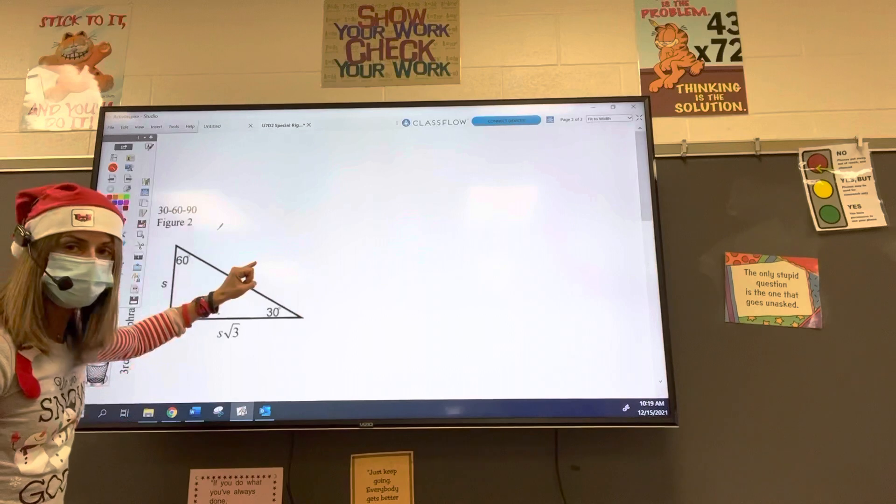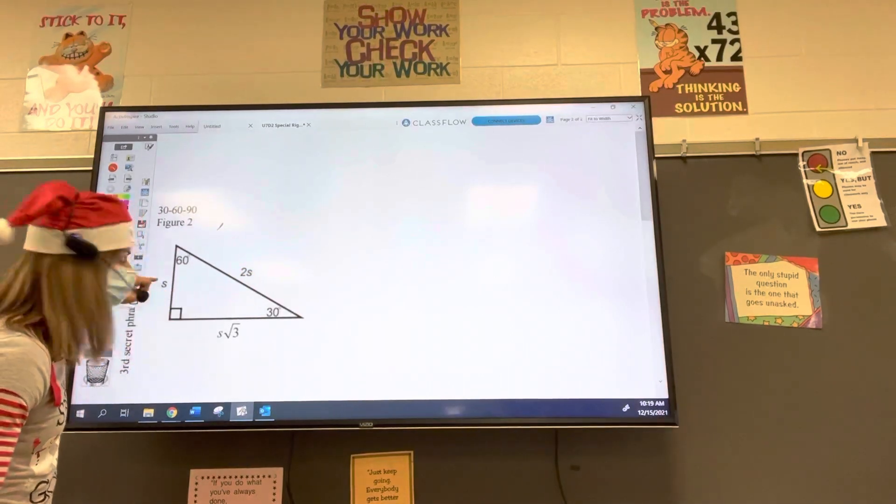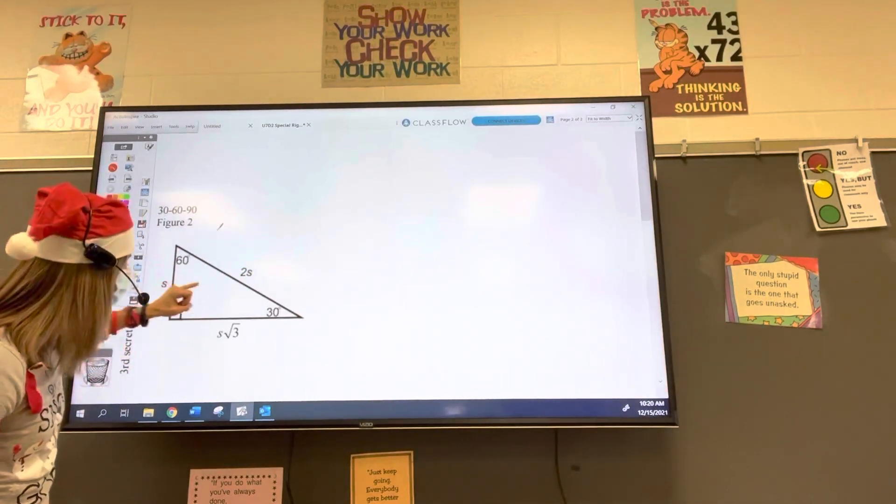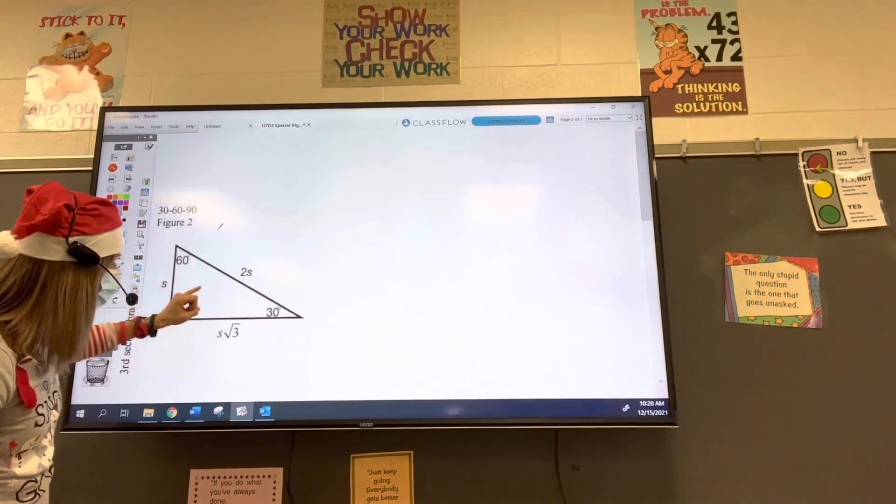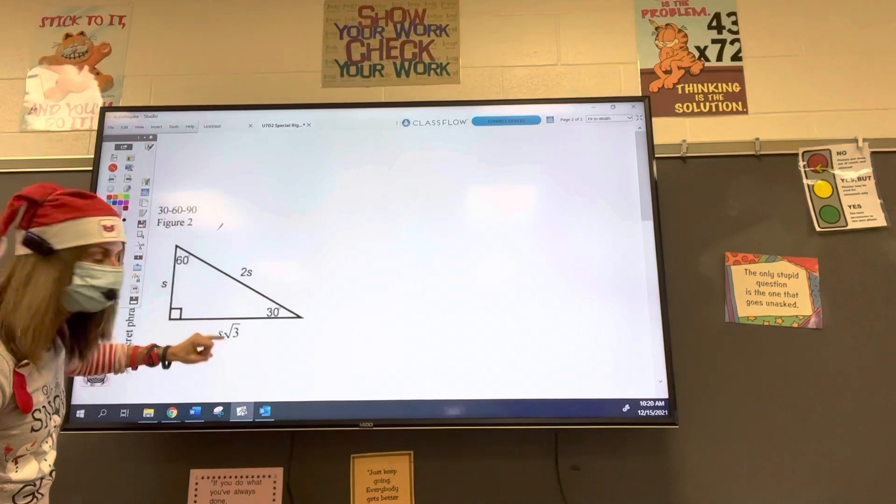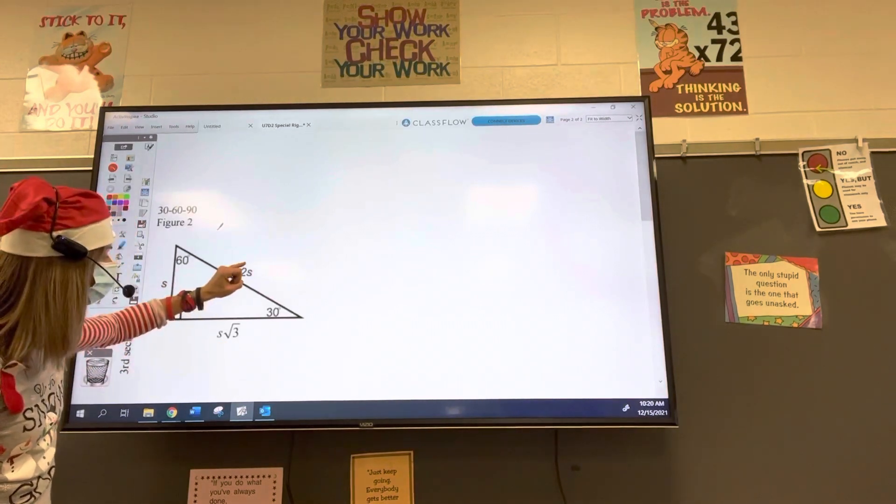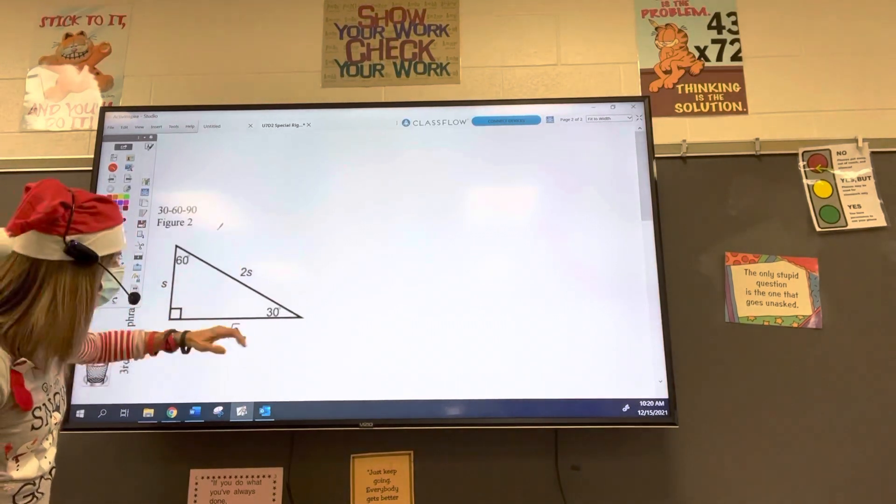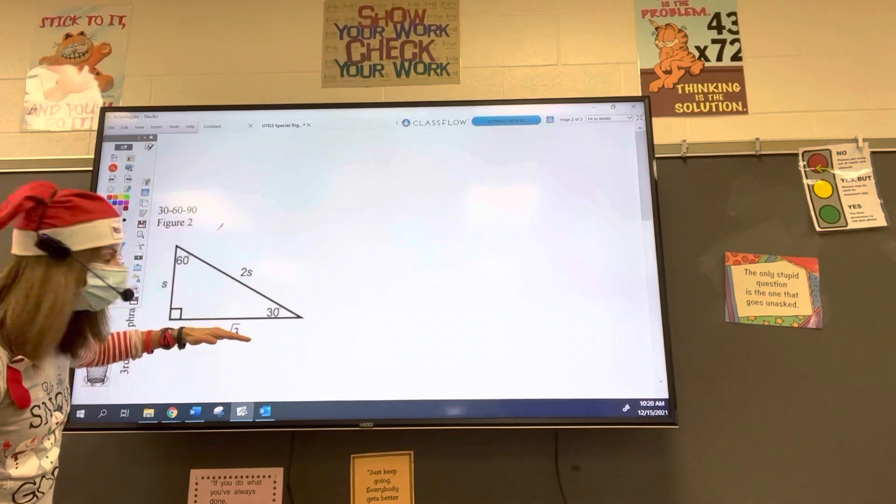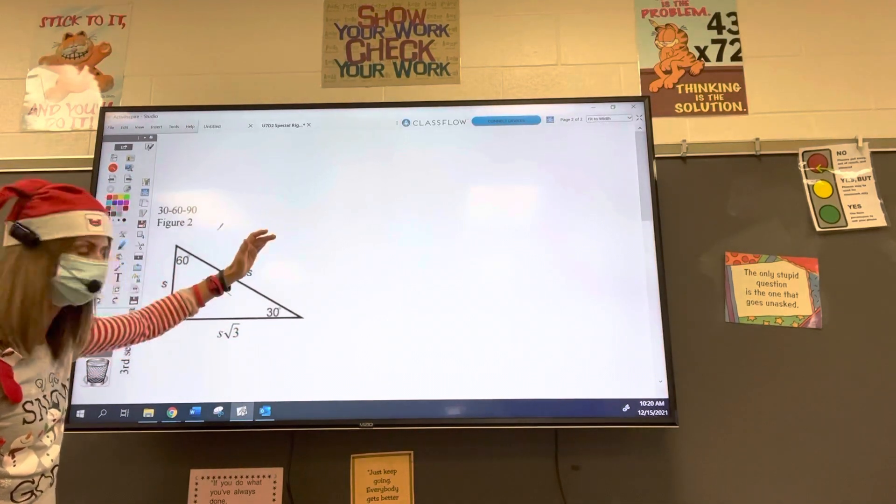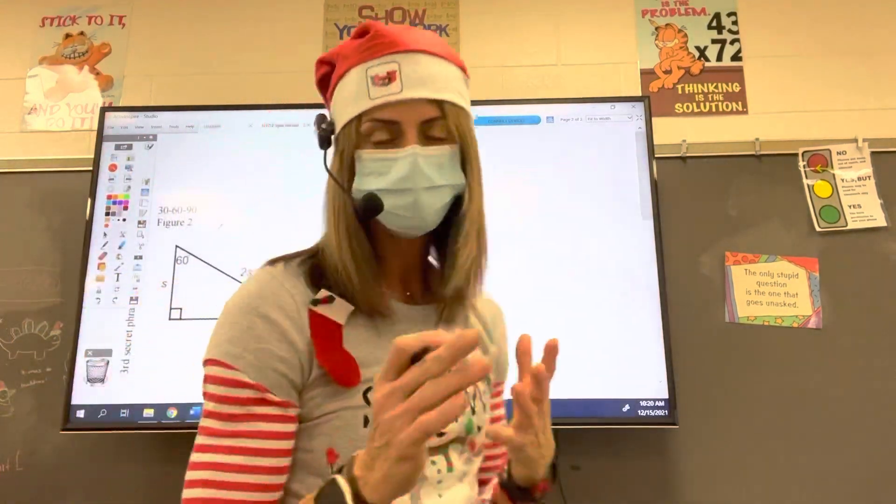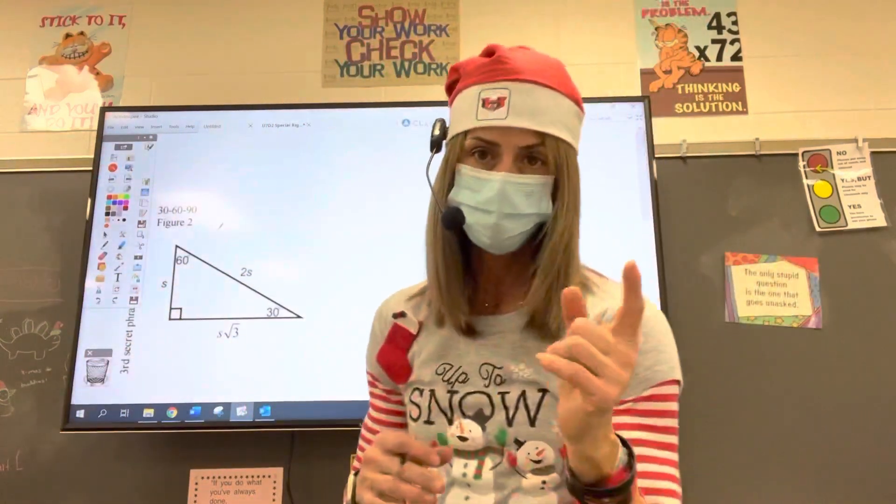So if we're given the hypotenuse, we're going to divide by 2 to get the short side, and then multiply by the square root of 3 to get the long side. Or if we're given the short side, we multiply by the square root of 3 to get the long side, and we multiply by 2 to get the hypotenuse. Hardest one is when we're given the long side, we have to divide by the square root of 3 to get the short side, and then times by 2 to get the hypotenuse. So everything revolves around the length of the short side. If you're not given the short side, you have to find that first.